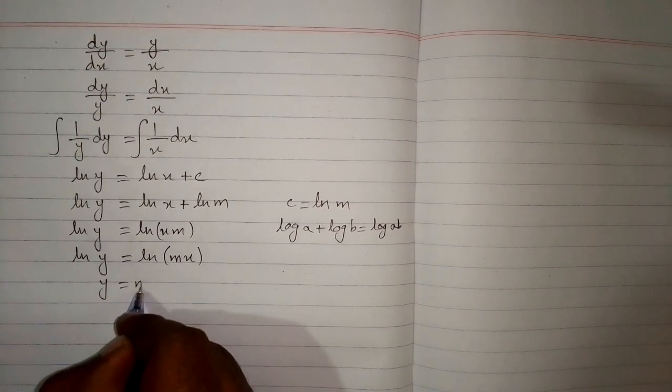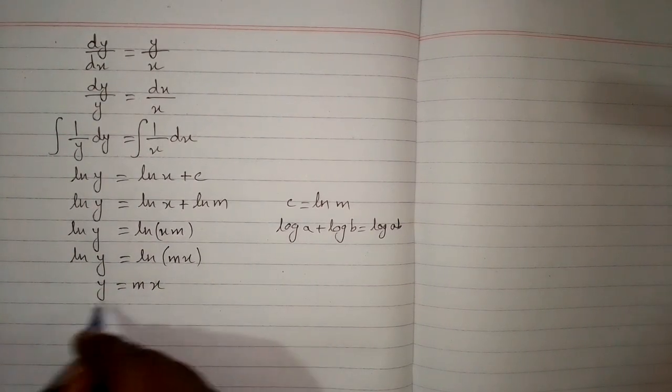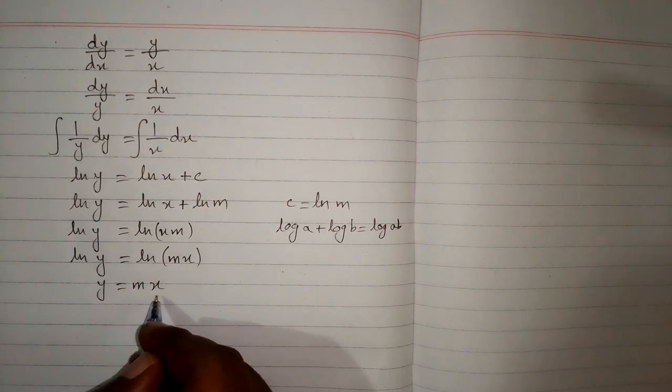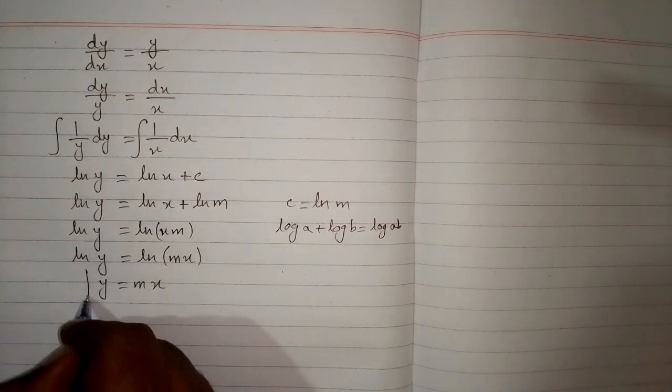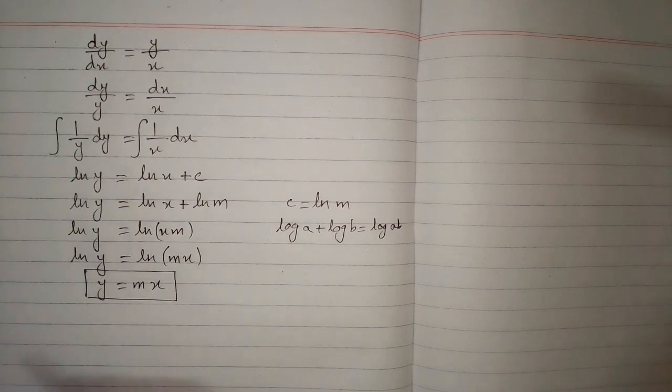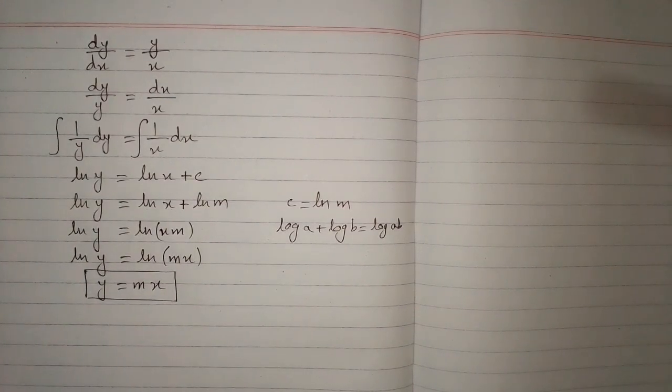So we have y is equal to mx which is the equation of a line passing through the origin and having gradient m. So this is the solution of the given differential equation.